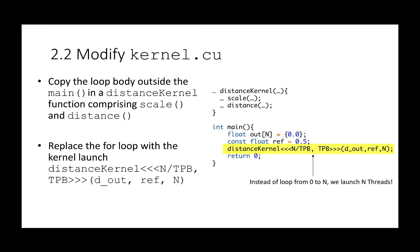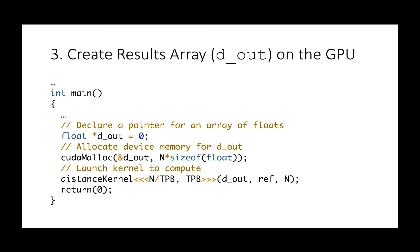Note that we want to have a thread for each grid point, so the total number of threads should be n. We will need to create an array on the GPU memory to store the results of the scale and distance operation for each thread. To do that, we declare a pointer to d_out and provide the pointer to this pointer as the first argument of the cudaMalloc function that allocates memory on the GPU. Here it is very easy to forget the ampersand in the first argument. Also note that the size is provided as a number of bytes.